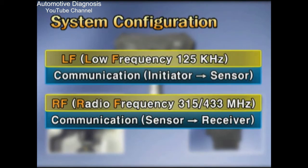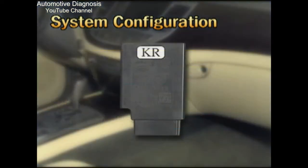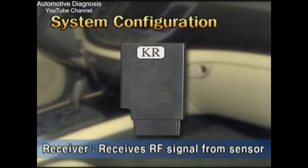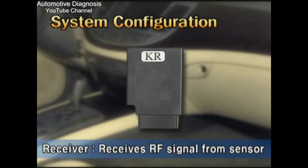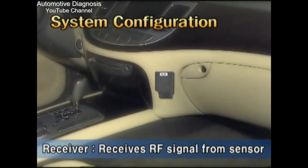RF, as the abbreviation of radio frequency, has 315 or 433 MHz, according to the area. The tire pressure, temperature, and sensor ID of each tire are sent to the receiver using RF signal. The receiver is installed at the back of the audio unit.